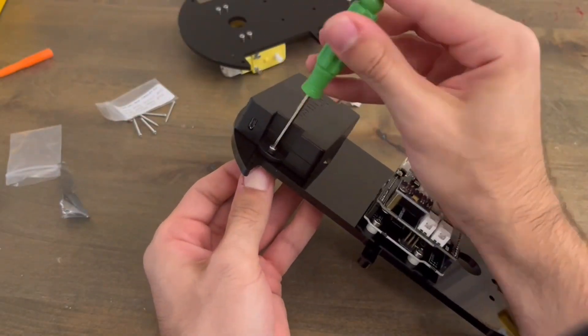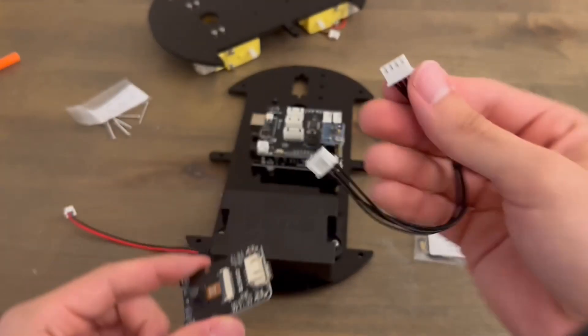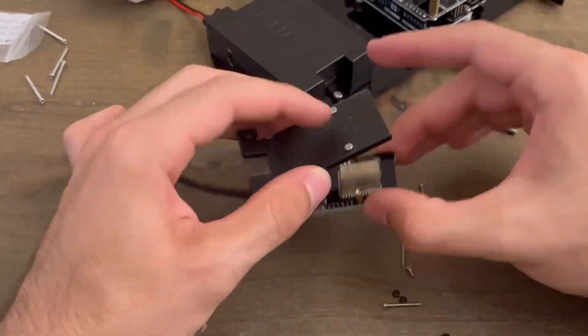Fortunately, the hex socket screws are compatible with one of the provided screwdrivers. Next we have our camera module, which is connected to a 4P cable and is mounted to an acrylic camera bracket plate.